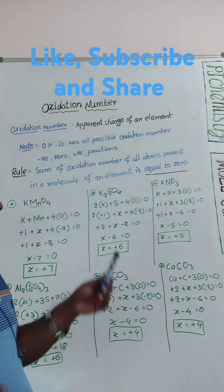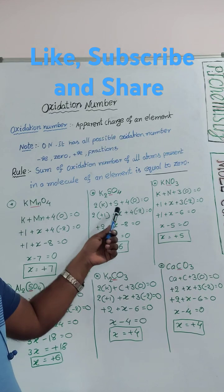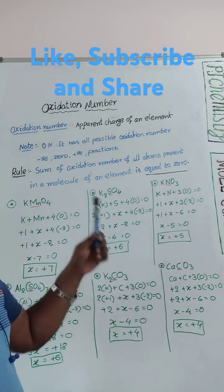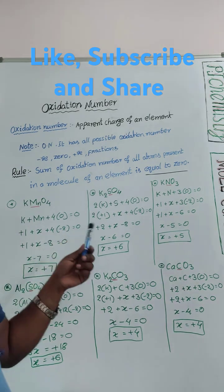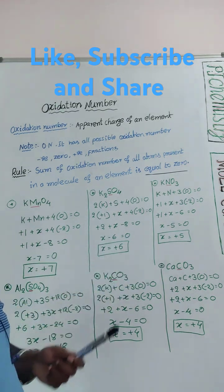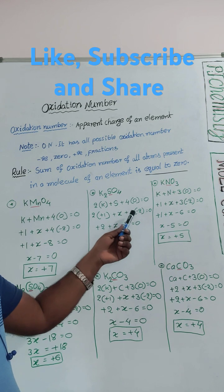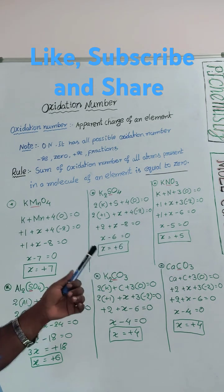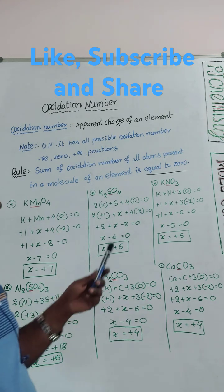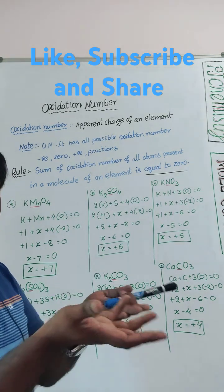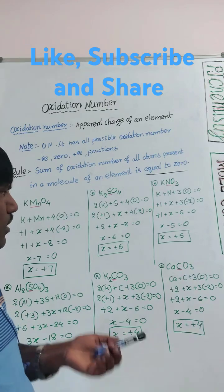Same way, K2SO4 potassium sulfate: 2 potassium plus 1 sulfur plus 4 oxygen equals 0. Write the oxidation numbers: 2(+1) + x + 4(-2). Oxygen gains 2 electrons, so oxygen oxidation number is -2.